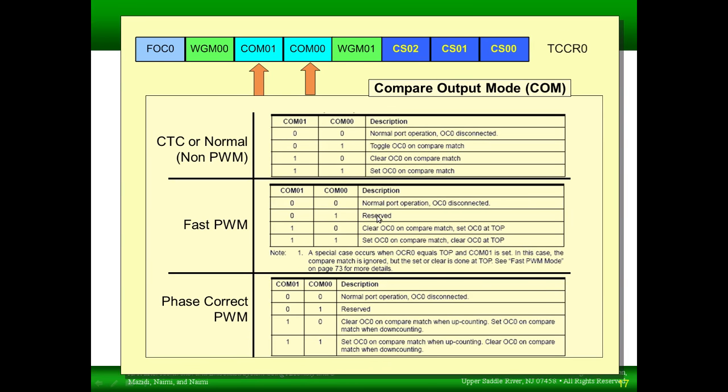This table shows the operation mode that corresponds to different compare output mode bits. And there are three different scenarios, whether the waveform generator is in CTC or normal, if we're in fast PWM mode, or if we're in phase correct PWM mode. So, fast PWM, if you want non-inverting PWM, that's where OC0 is cleared on compare match and set at top. Then we want 1, 0 in these bits. If we want inverting PWM, then we need 1, 1 in these bits.